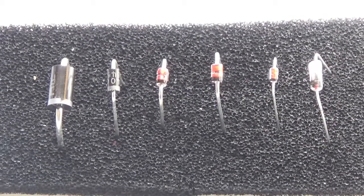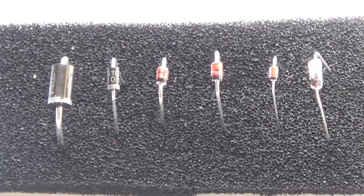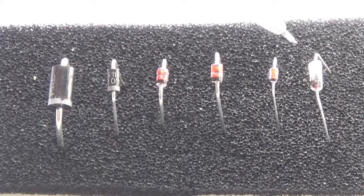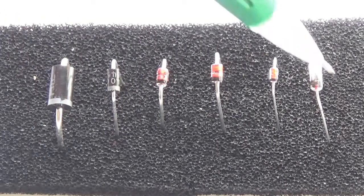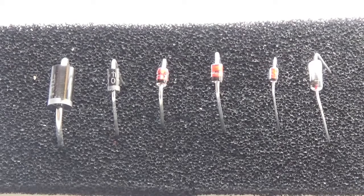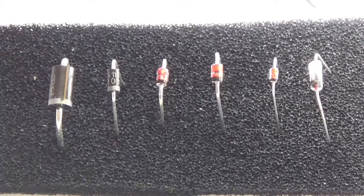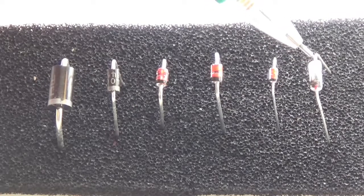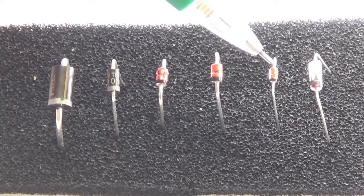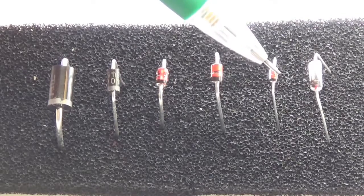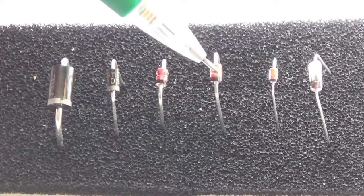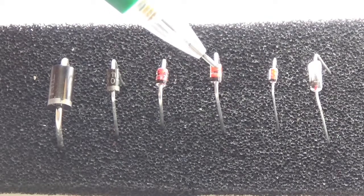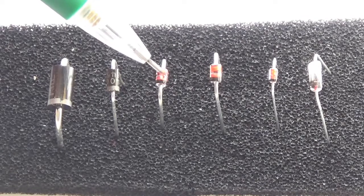Afternoon everyone, right now we have six diodes in front of us and we're going to look at the different diode voltage drops across these diodes with our meter. This one over here is a germanium diode, that's a 1N34A. Here's a small signal diode, 1N4148. Here's a zener diode, a 5.6 volt zener.